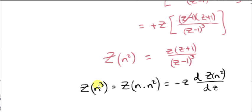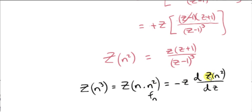You can imagine continuing in a similar way to get the Z-transform of n cubed. Write n cubed as the product of the ramp sequence n with the sequence n squared. Then n squared becomes our f sub n. Applying the property, we multiply minus z times the derivative of the Z-transform of n squared with respect to z — so we would differentiate the result we just found and multiply by minus z.